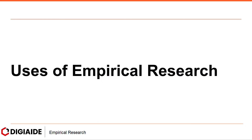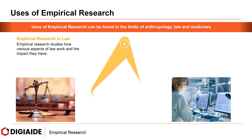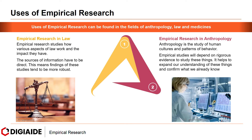Finally, uses of empirical research. Empirical research can be found in the fields of anthropology, law, and medicine. In law, empirical research studies how various aspects of law work and the impact they have. The sources of information have to be direct, meaning findings tend to be more robust. The things studied include law enforcement, procedures, rules, and organizations. In anthropology — the study of human culture and patterns of behavior — empirical studies depend on rigorous evidence to expand our understanding and confirm what we already know.